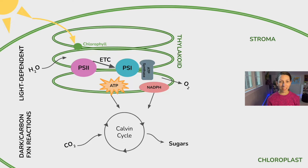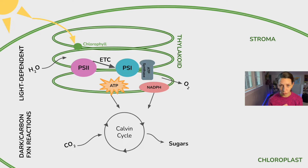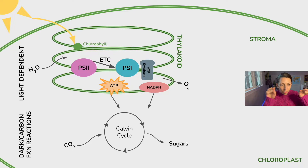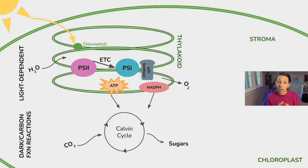There are two main parts of photosynthesis we're going to study at the AP biology level. We have the light-dependent reactions, or light reactions of photosynthesis, and we have the dark or carbon fixation reactions. All of this is taking place within the chloroplast. The space in the chloroplast is called the stroma, but there's also a third membrane — the thylakoid membrane — and these membranes provide concentration gradients for some essential parts of the process to happen.